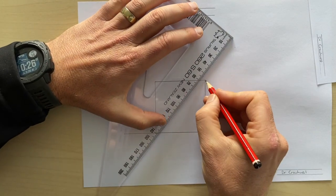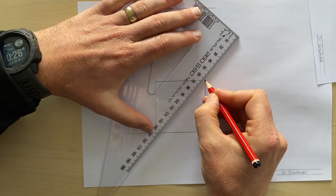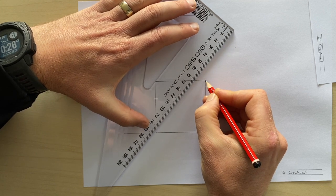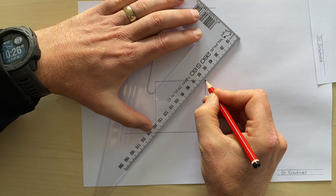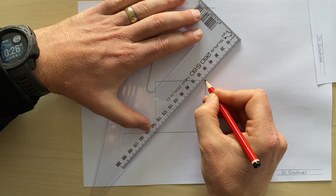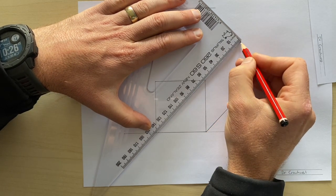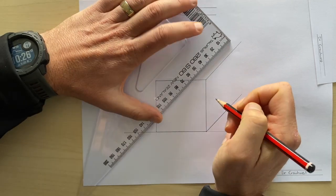Then come along. See how I'm using the ruler? I start by putting my pencil on one point and then line the ruler up, bring it round like that.